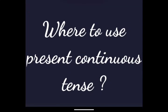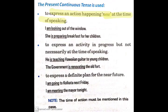Now let's see where to use present continuous tense. First, it is used to express an action happening now at the time of speaking. If the action is going on when the person is speaking, then we use present continuous tense. For example: 'I am looking out of the window.' 'She is preparing breakfast for her children.' This means that while the person is speaking, the other person is doing that work.